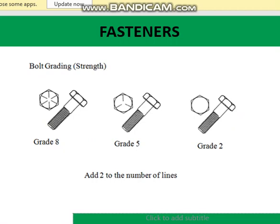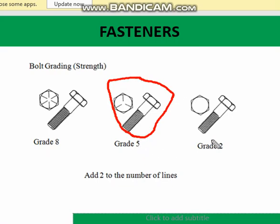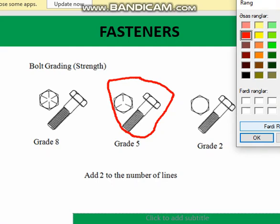Grading: bolt grading shows its strength. There are different types of bolts classified by grades — Grade 8, Grade 5, and Grade 2. The higher the grade, the stronger the bolt. The grade can be found by counting the number of lines on the bolt head and adding 2. For example, if a bolt has 3 lines, we add 2 and get a Grade 5 bolt.